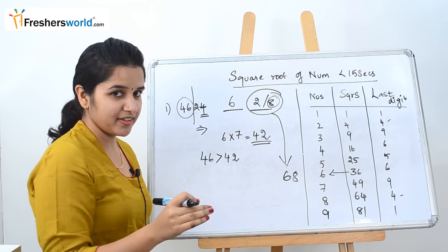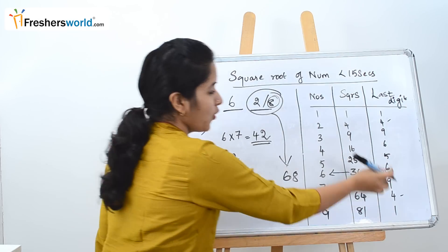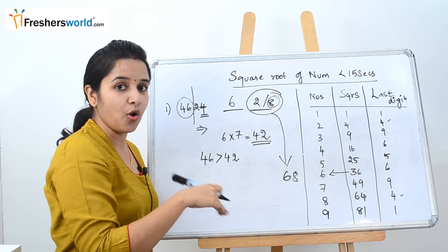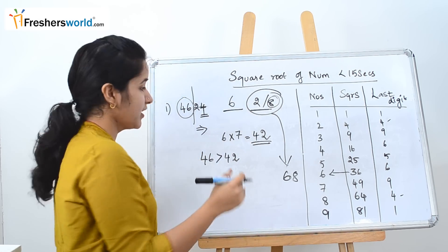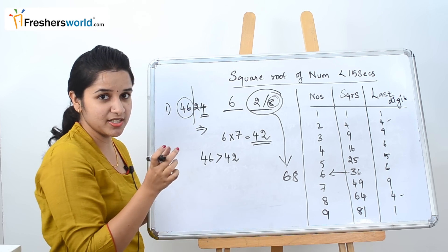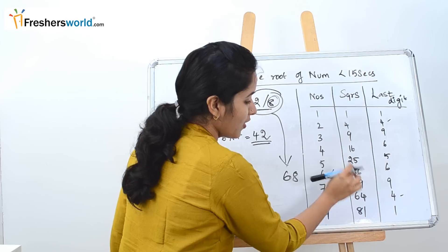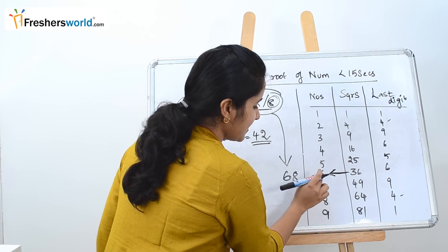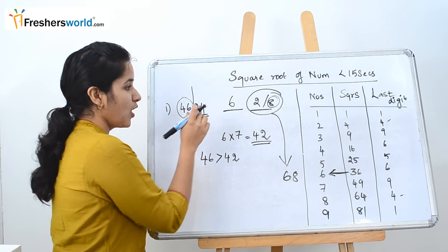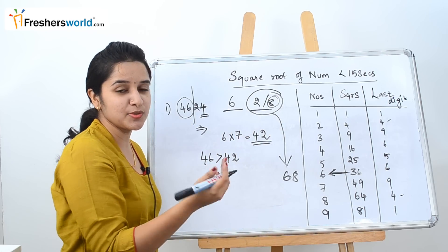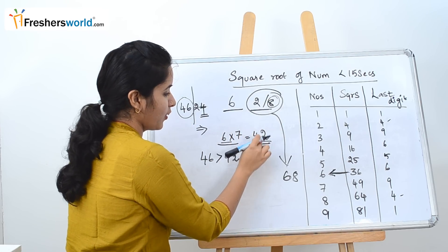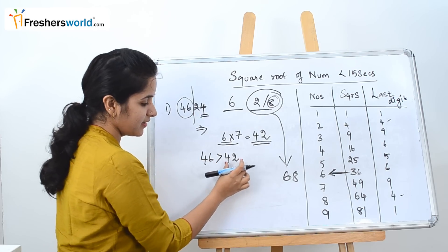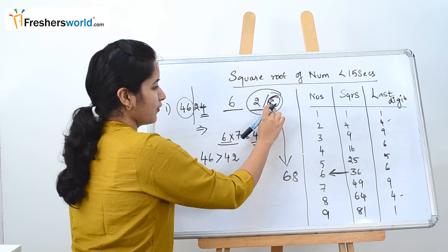Let's recap. You take the last digit of the question and find where it matches in the last digit column — 4 matches 2 and 8, so you write either 2 or 8. Then ignore the last 2 digits and take the first two digits. See where they fall between the squares — 46 falls between 36 and 49, so you take the lowest value, 6. Multiply 6 by 7 to get 42. Compare with 46: since 46 is greater, take the larger number, giving 68.